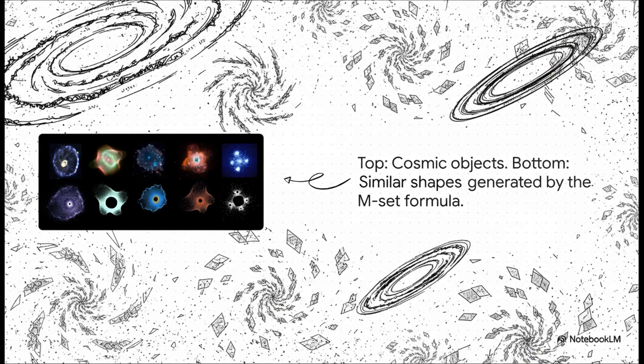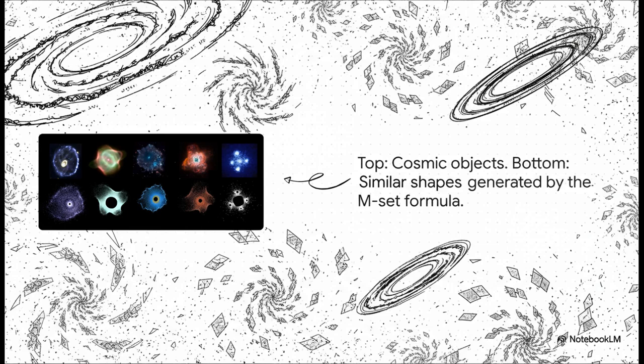I mean, just take a look at this. On the top, you've got real astronomical objects, like the Cat's Eye Nebula. And below them? Those are shapes generated just by plotting the path of a single point from the M-set's quasi-photon sphere. The visual similarity is, well, it's uncanny.